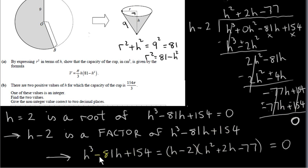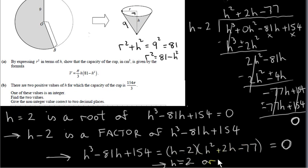So we can write this cubic expression as h minus 2 multiplied by h squared plus 2h minus 77. When solving this cubic equation, it's equivalent to setting this factored form to zero. The product of the factors is zero, so either h minus 2 equals zero — giving h equals 2, which we already have — or the other factor equals zero, giving a quadratic equation.